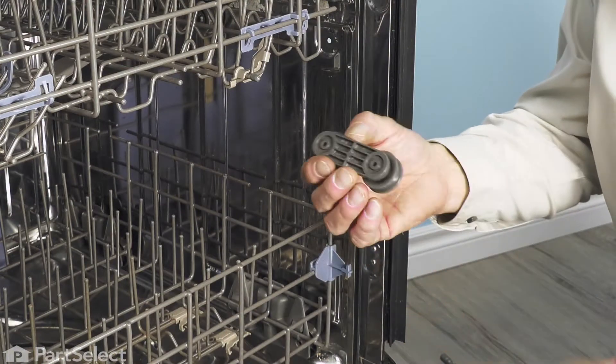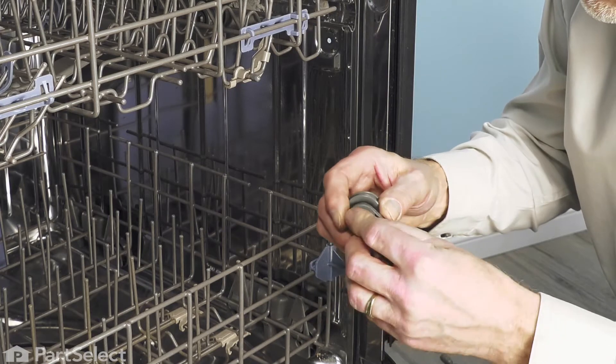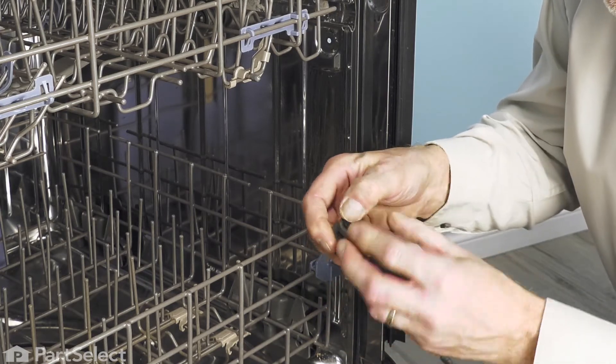Now before we install the new one, we want to make sure that we push those rubber washers into place on the backside of the tub wheel assembly.